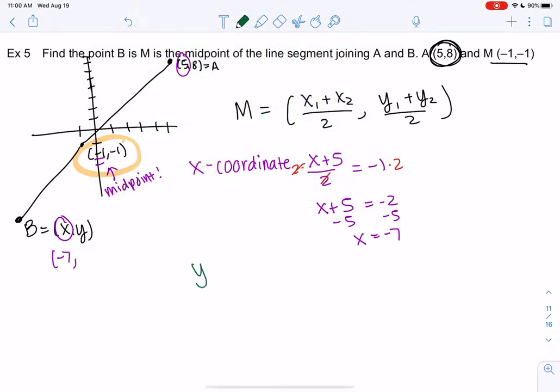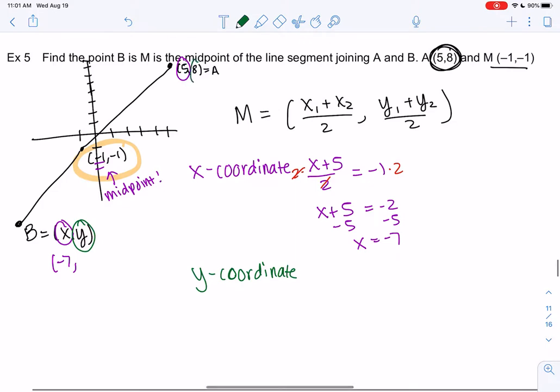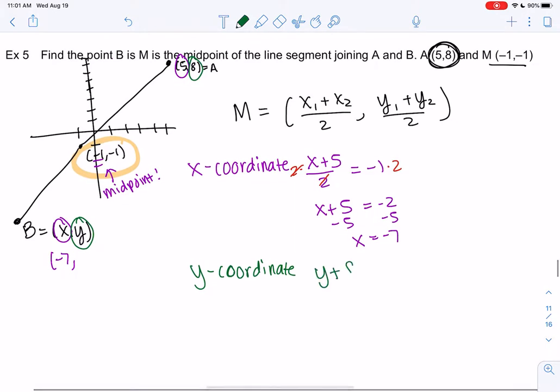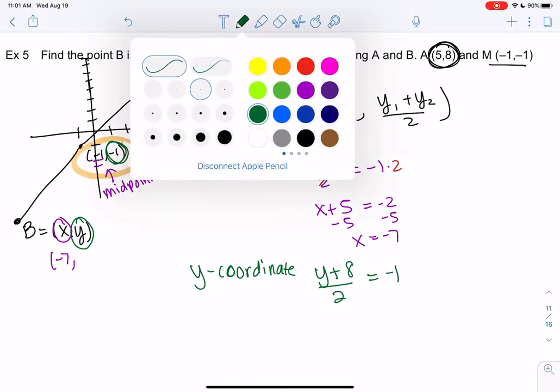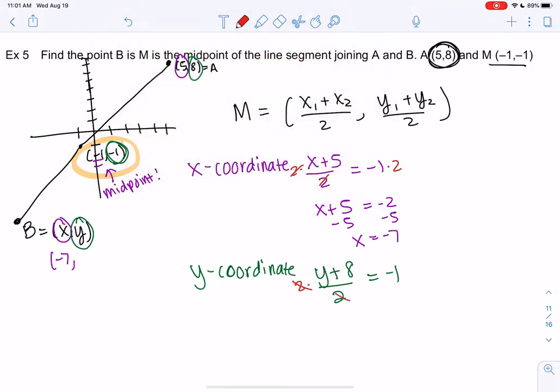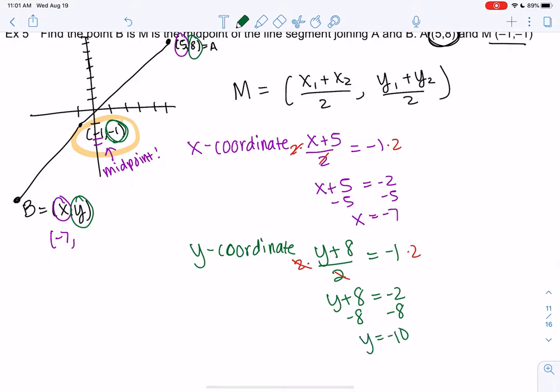Let's try the y coordinate. So we have y1 is y, y2 is 8. So y plus 8 over 2. And then since we know the midpoint, we're going to set it equal to negative 1. The y coordinate is also negative 1. So we'll times by 2. y plus 8 is negative 2 and minus 8. So y would be negative 10. And that's my other coordinate.